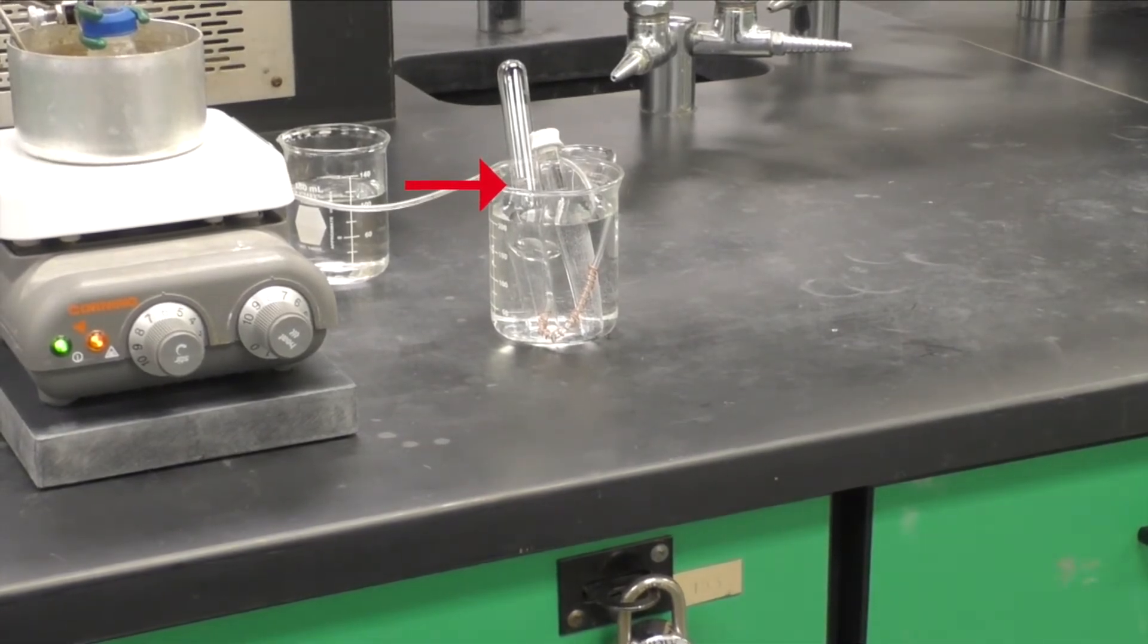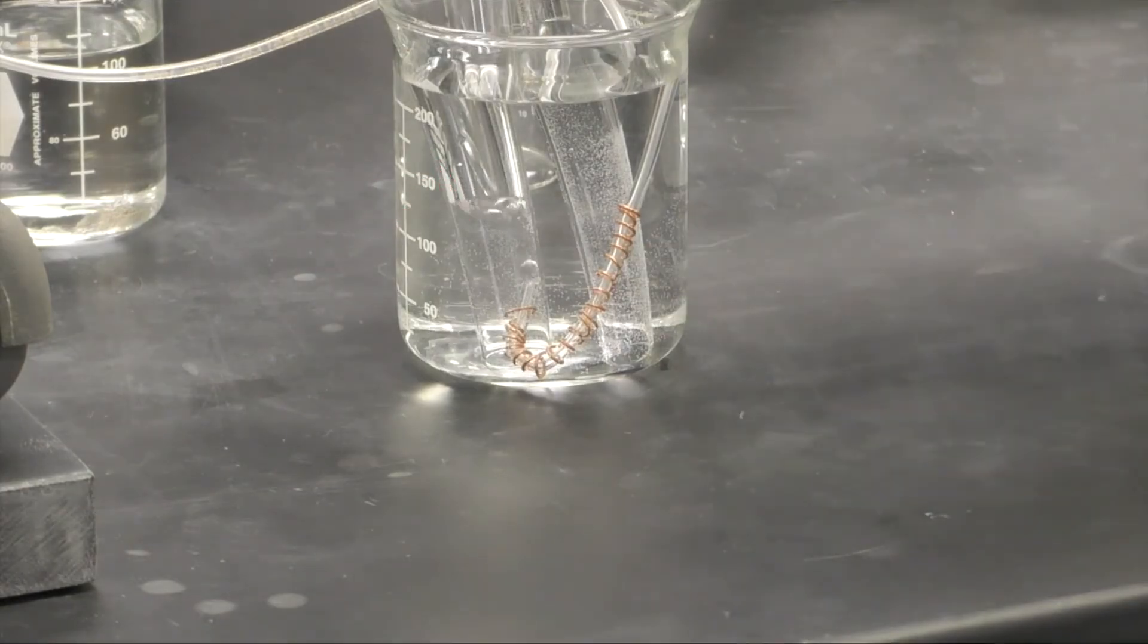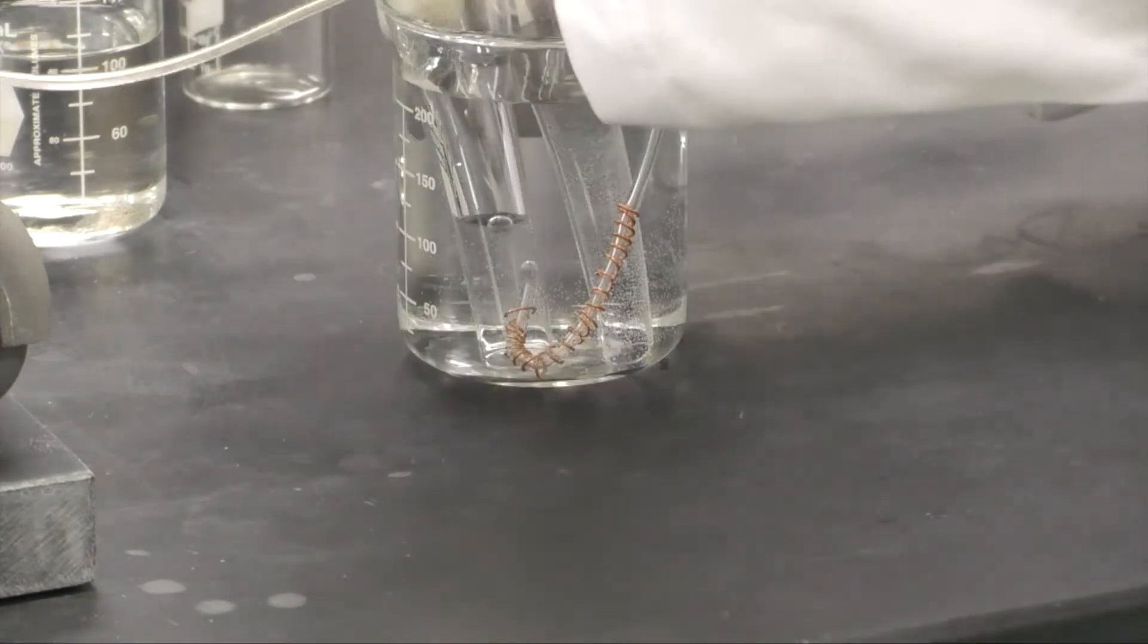When the column of gas gets to about 1 inch from the bottom of the test tube, remove it.